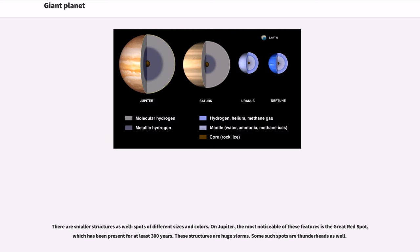There are smaller structures as well, spots of different sizes and colors. On Jupiter, the most noticeable of these features is the Great Red Spot, which has been present for at least 300 years. These structures are huge storms. Some such spots are thunderheads as well.